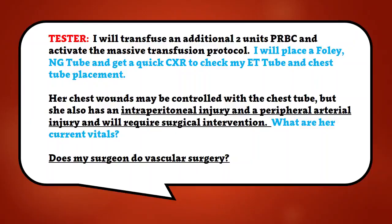I'll transfuse an additional two units of packed red blood cells and activate the massive transfusion protocol. I'll place a Foley, NG tube, and get a quick chest x-ray to check my ET tube and chest tube placement. Her chest wounds may be controlled with the chest tube, but she also has an intraperitoneal injury and a peripheral arterial injury and will require surgical intervention.